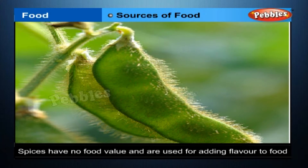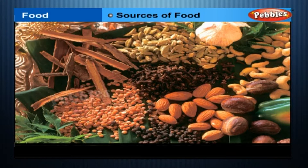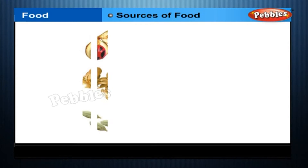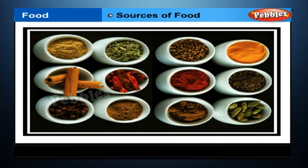Spices have no food value and are used for adding flavor to food. Before the advent of refrigeration, spices were also used for preserving foods. The major spices produced are pepper (kali mirch), cardamom (ilaichi), ginger (adrak), turmeric (haldi), and chilies (mirch). Other spices of importance are cloves (lung), saffron (kesar), fennel (saunf), cumin (jeera), coriander (dania), asafoetida (hing), fenugreek (methi), nutmeg (jaipal), and thyme (ajwain).